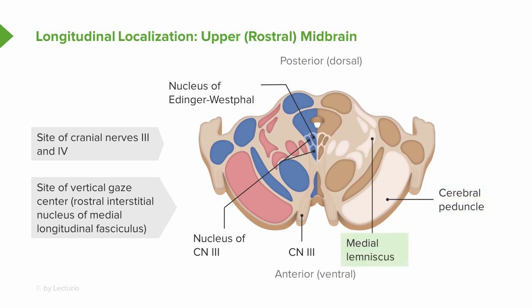The medial lemniscus, which controls sensory information, and the spinothalamic tract are also important. The spinothalamic tract controls pain and temperature, while the medial lemniscus carries vibration and proprioception. These can help us further localize a stroke in the midbrain.